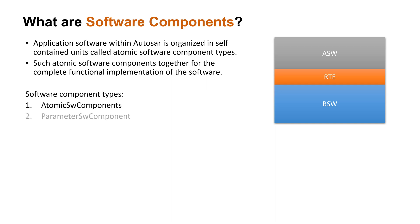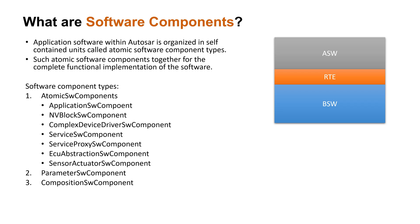Software components can be further categorized into atomic software component type, parameter component, and composition software component type. The atomic software component type can pick any one of seven component types based on the functionality. We shall see each and every component in detail and understand when and where to use them.